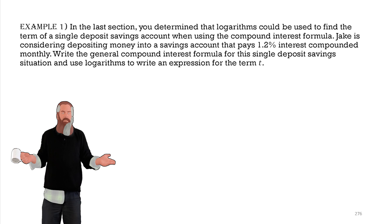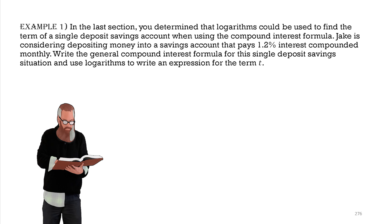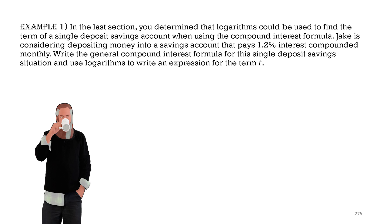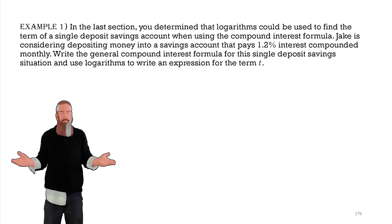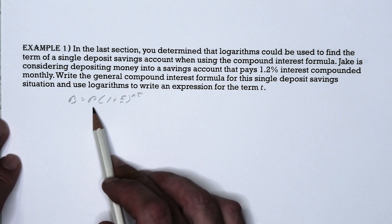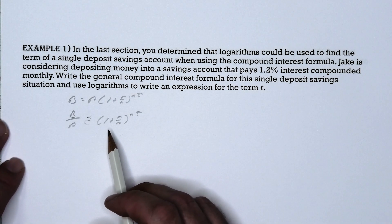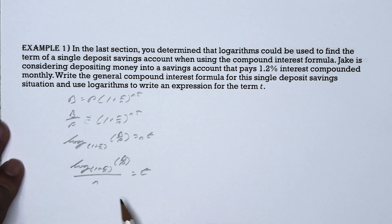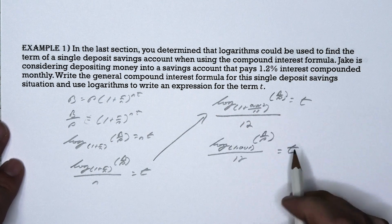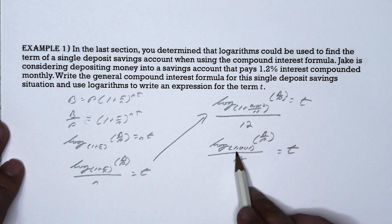In the last lesson, we determined that logs could be used to find the term of a single deposit savings account when using the compound interest formula. Jake is considering depositing money into a savings account that pays 1.2% interest compounded monthly. Write a general compound interest formula for a single deposit savings situation and use logarithms to write an expression in terms of t. We know the formula is b equals p times 1 plus r over n to the nt power. We divide both sides by p, turn it into a logarithm, divide both sides by n, then substitute in known values. Simplifying 1 plus 0.012 divided by 12 gives us 1.001.